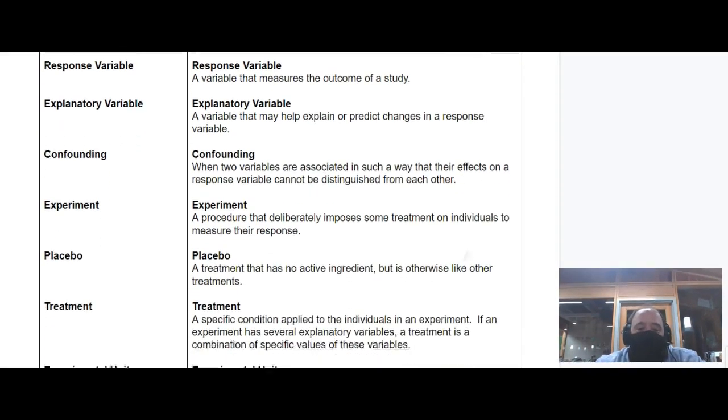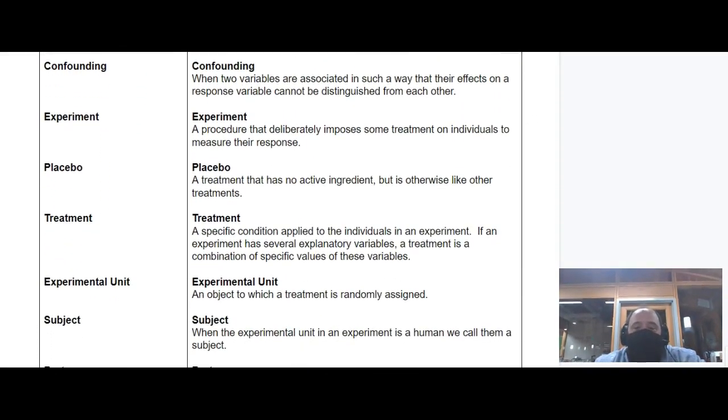When we do an experiment, we actually impose some sort of treatment on the experimental units, on the things that are being measured. We deliberately do something to them and then watch the result. Sometimes it's helpful to have something called a placebo, which is basically exactly the same as the treatment except there's nothing active about it.